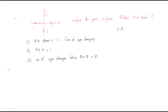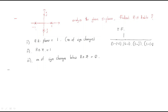We have four poles, so the transfer function is of the form zero over the product of pole factors. The first pole is s minus (−1), i.e., s plus 1. The second pole is s minus 1. The third pole is s minus j, and the fourth pole is s minus (−j), i.e., s plus j.